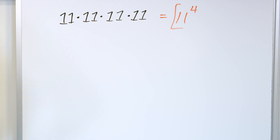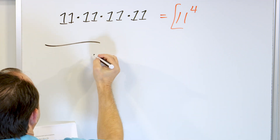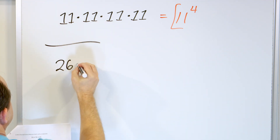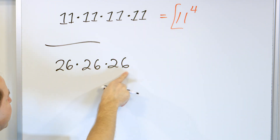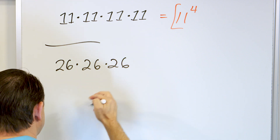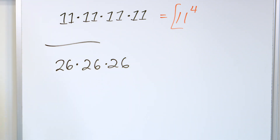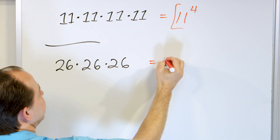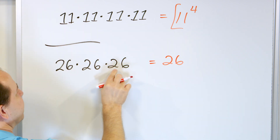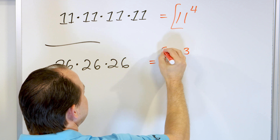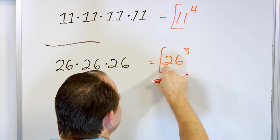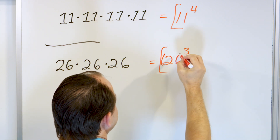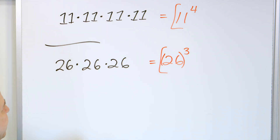What about larger numbers? What about 26 times 26 times 26? I have no idea what this equals — you can use a calculator. How do you write this product of factors as a term with an exponent? I'm multiplying 26s together and there are one, two, three of them. So it's 26 to the power of three. Note: this is not two times six to the power of three — this is 26 to the power of three. You could put parentheses around it if you want, to indicate that the number 26 is raised to the power of three.